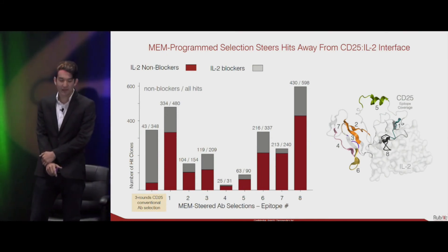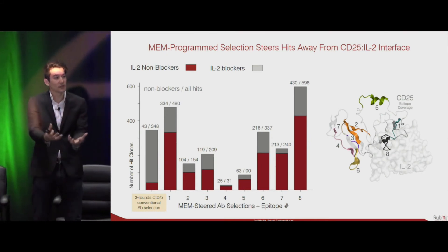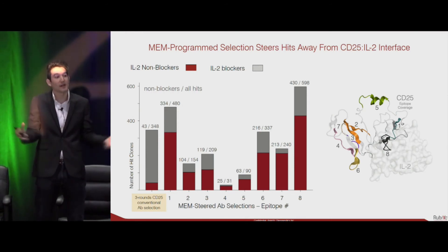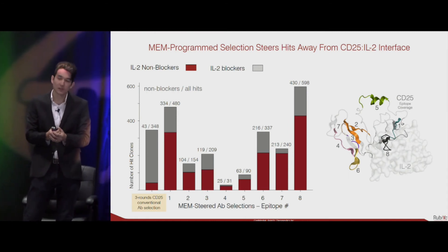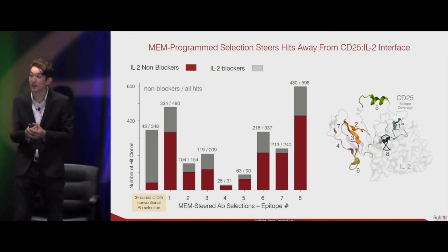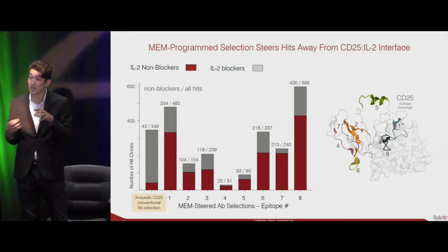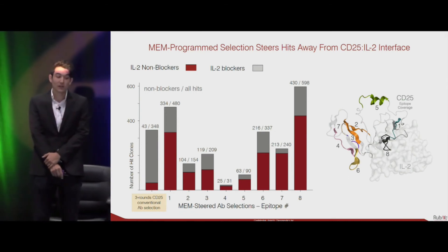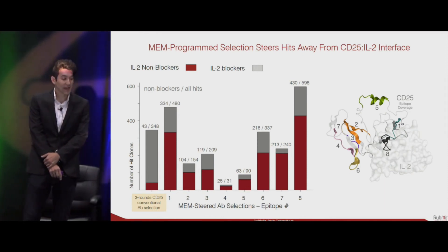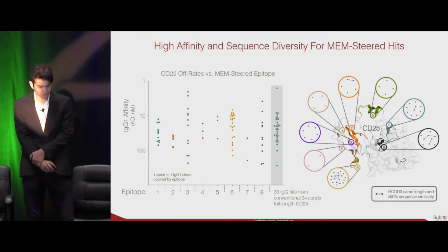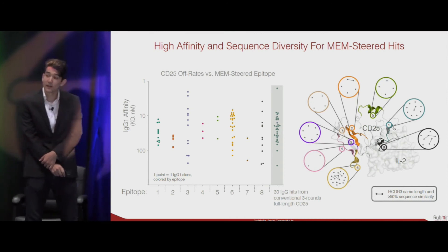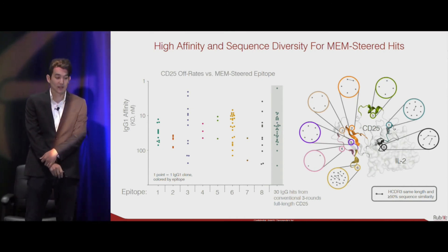We then asked how well we achieved our original goal of steering antibody hits away from the CD25–IL-2 interface. With the conventional strategy, most hits bind at that interface because of the dominant epitope there. But with the MEM program selection, that ratio gets flipped on its head — we end up seeing most of our antibody hits being the desired IL-2 non-blockers. We're also not sacrificing anything in terms of affinity or sequence diversity coming out of our MEM campaigns.